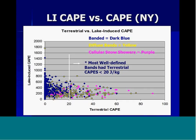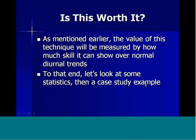The upper left portion of the scatter plot favors well-organized bands, whereas the lower right favors disorganized activity. The ultimate answer may be to somehow combine those three elements: the lake-induced CAPE, the terrestrial CAPE as a stability proxy, and the speed shear.